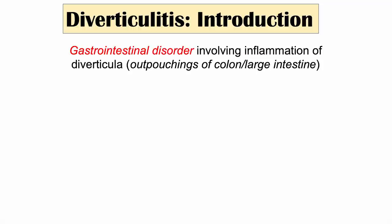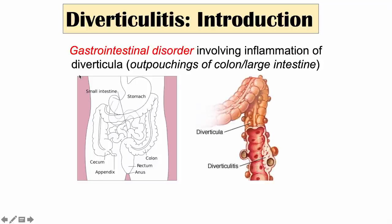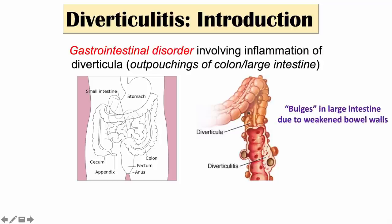What are diverticula and what is the large intestine? Here is the gastrointestinal system, including the stomach, leading into the small intestine, leading into the large intestine. The large intestine is what gets affected in diverticulitis. Diverticula are outpouchings — if we zoom up on this area, we can see the large intestine has these little outpouchings, these little bulges in the large intestine wall. This is due to weakened bowel walls.